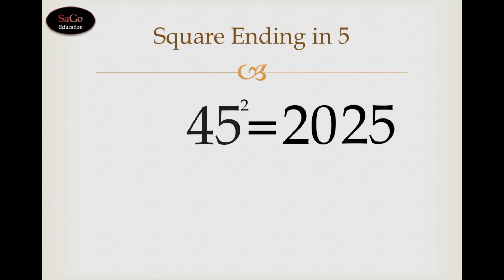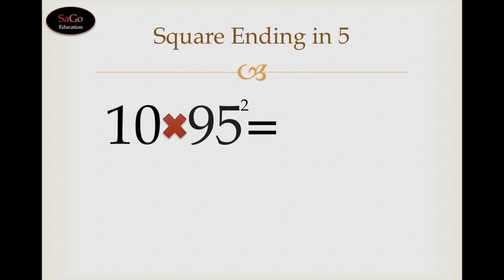Let's take one more number: 95 square. What comes after 9? 10. Multiply 9 by 10 and we would get 90. Now what is the square of 5? 25. 9025 is the answer.